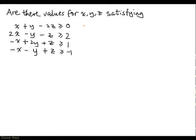But in a previous video, we saw how we could turn this system into a system involving only two variables by concentrating on one variable and seeing how it is related to the other variables. This time, we're going to look at the variable x — focus our attention on x and write it in terms of y and z.